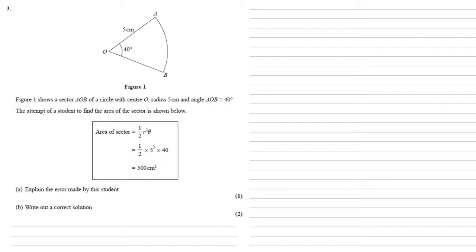Figure 1 shows a sector AOB of a circle with centre O, radius 5 centimeters and angle AOB equals 40 degrees. The attempt of a student to find the area of the sector is shown below.